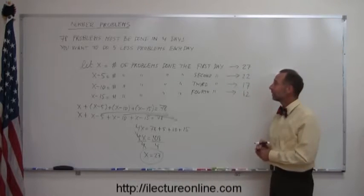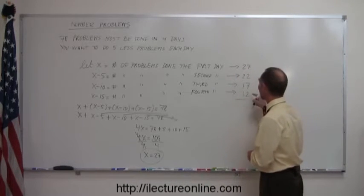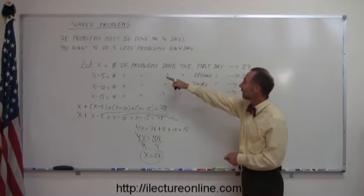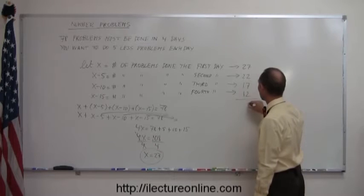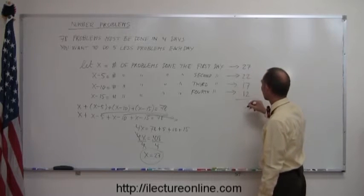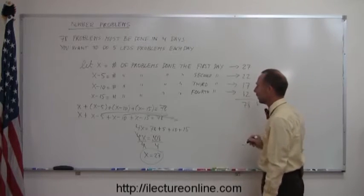And again, to make sure that we did this correctly, let's add these all together. That should add up to 78, right there. So, 7 plus 2 is 9, 16, 18, 8, carry the 1, 3, 5, 6, 7. Ha! Bingo! Correct answer.